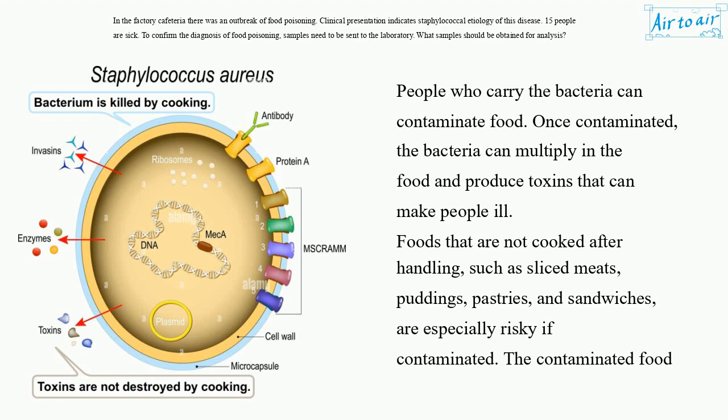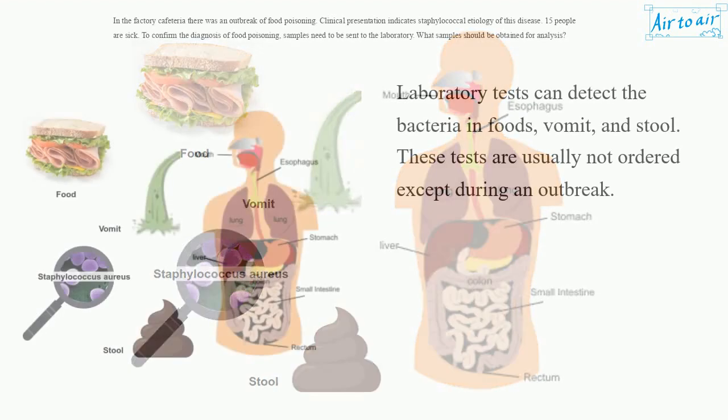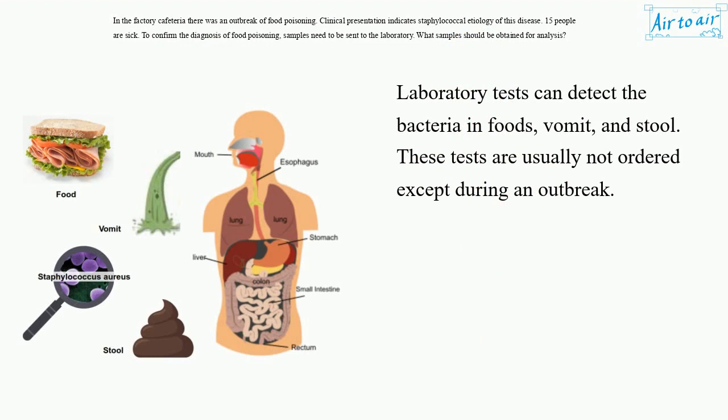The contaminated food may not smell bad or look spoiled. The bacteria are killed by cooking, but the toxins are not destroyed and will still be able to cause illness. Laboratory tests can detect the bacteria in foods, vomit, and stool. These tests are usually not ordered except during an outbreak.